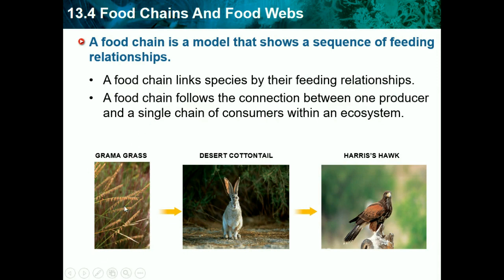Producers don't eat anything — they produce their own energy and are called autotrophs. Then we get our primary consumer, which eats the producers. Here we have the desert cottontail, like a rabbit, that eats the producer, so it's called a primary consumer. They're usually herbivores that eat only producers. Then we have secondary and tertiary consumers, but in this short food chain we just have our hawk that eats the primary consumer. Depending on what's in between, something could be a secondary or tertiary consumer. So a food chain is just one line of consumers and a producer.